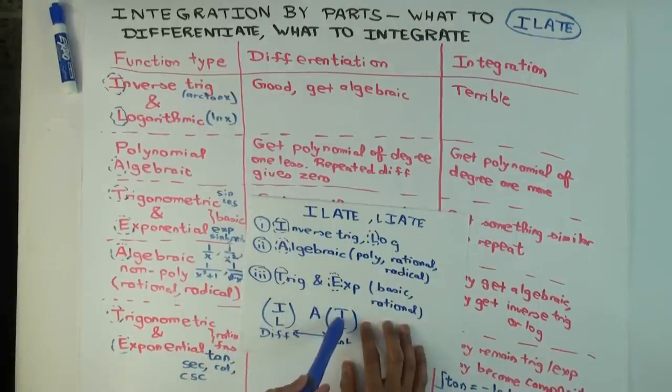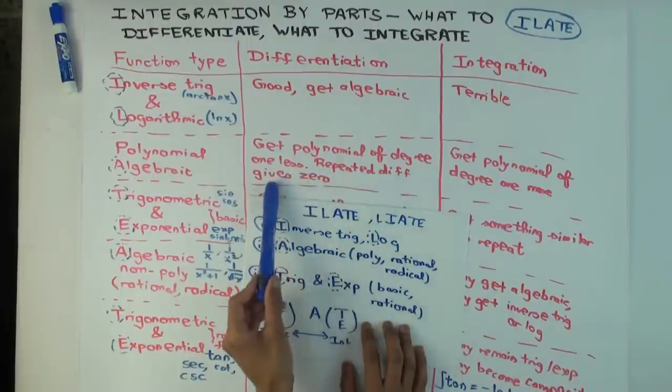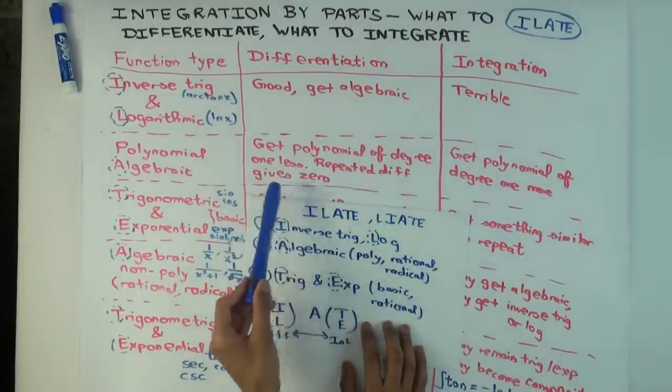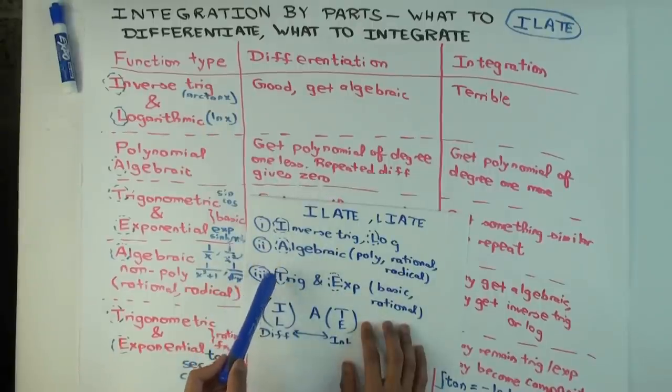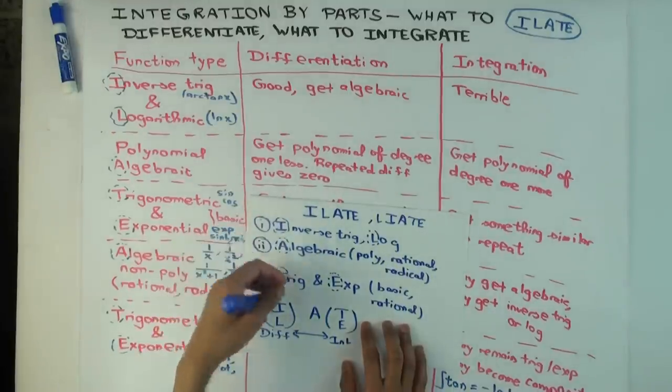On the other hand, if it's competing with a trigonometric or exponential, then the polynomial, when you differentiate, what happens to its complexity? The degree goes down by one. And eventually the degree, the polynomial becomes zero, which means that when it's competing with the trig or exp thing, then the polynomial is something which you want to differentiate because complexity goes down.